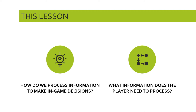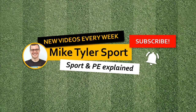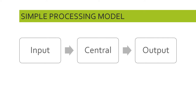We're going to look at two different models. We're going to look at a simple processing model and then expand it to give a bit more depth of detail. The first model is called the simple processing model, because it's as simple as we could possibly make it. It represents what's going on in body and mind as we process the game around us and select certain skills to perform in order to meet the demands of that game.